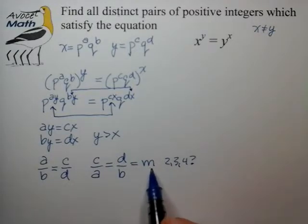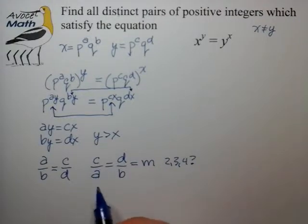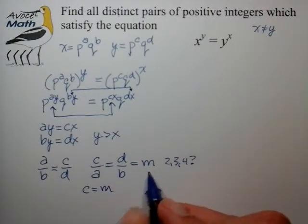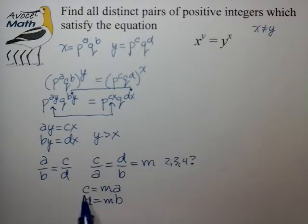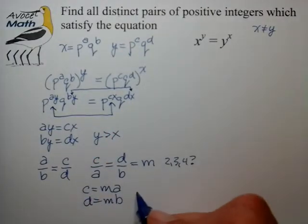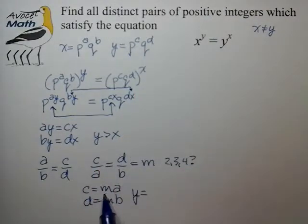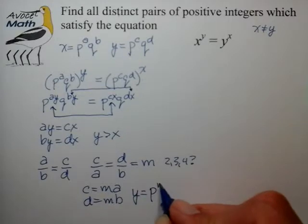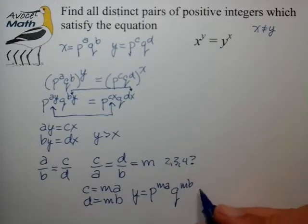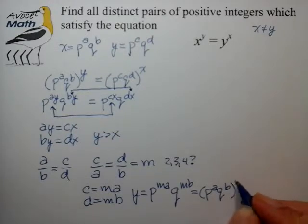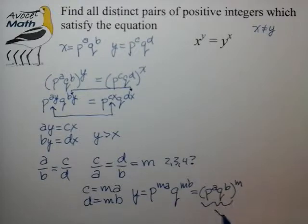we don't know what at this point. And at that point we can basically write c as a function of a. c is equal to this ratio factor m times a and likewise d is equal to that ratio factor times b. And this looks really handy now because this means that we can plug c and d into this equation and write y as a function of x. So we basically see now that y is equal to p to the c, which we know is equal to m a, p to the m a times q to the m b. And if we pull the m exponent out,